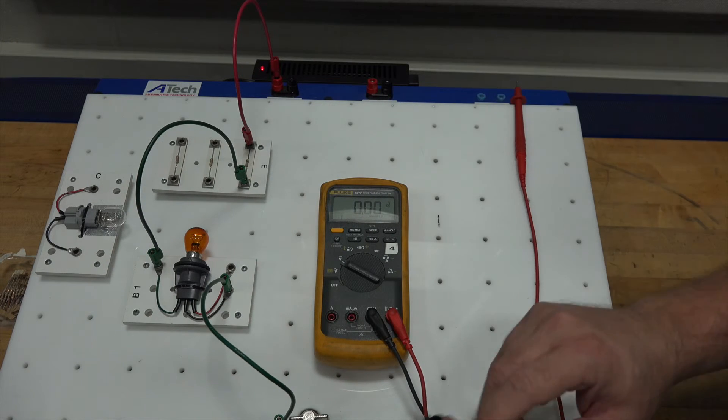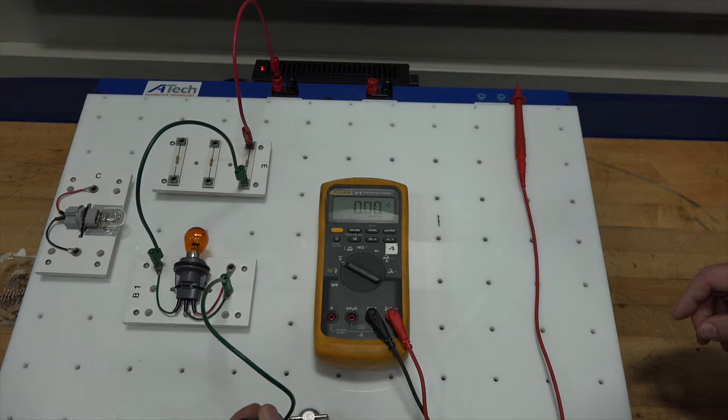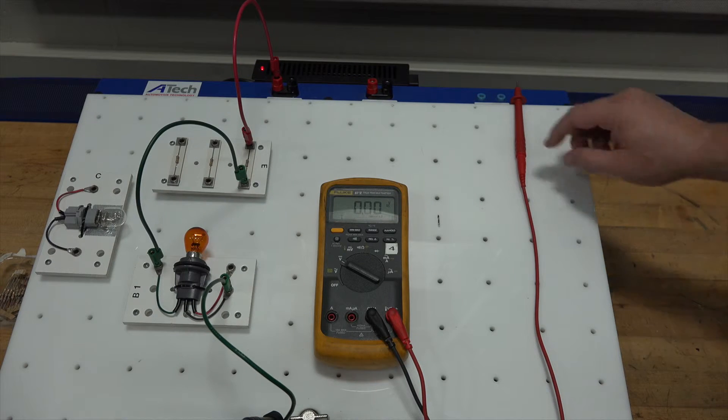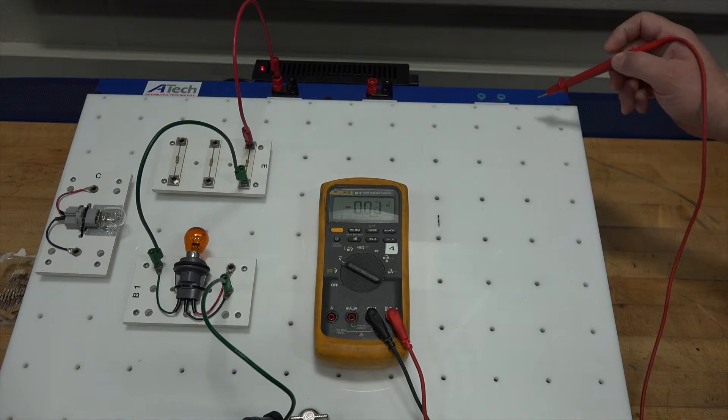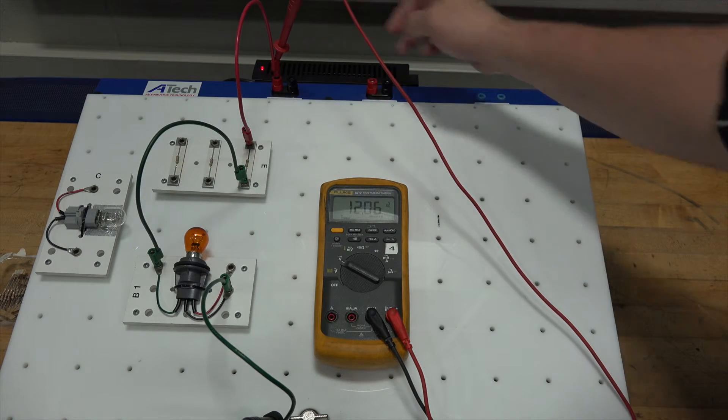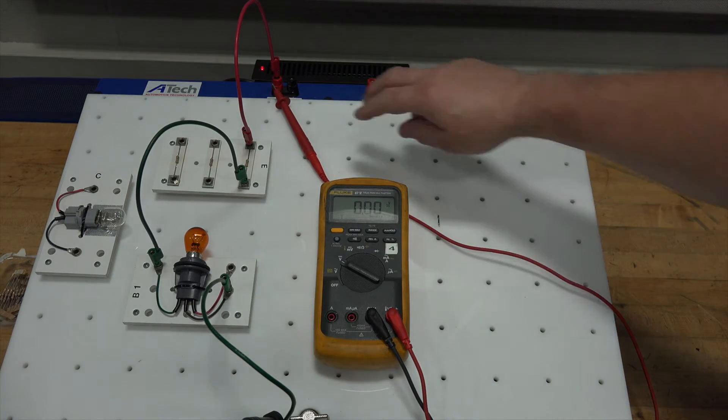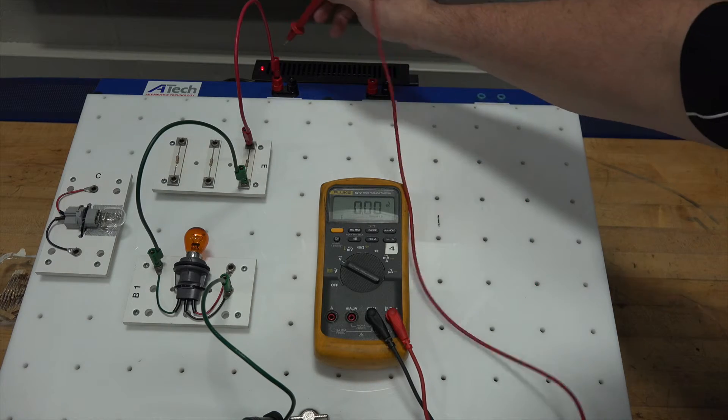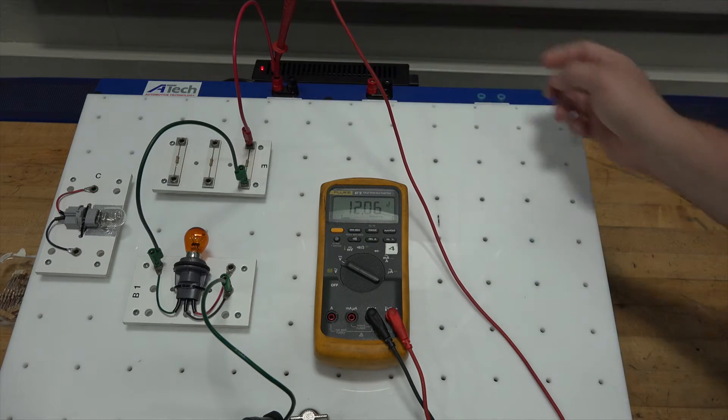My black lead, I'm going to put on a known ground, preferably the negative terminal of the battery if possible. Then I'm going to go ahead and test. This is the voltage coming from the power side. Now, do you start at the power side? Do you start at the ground? Do you start at the load? Well, it just depends on the circuit.